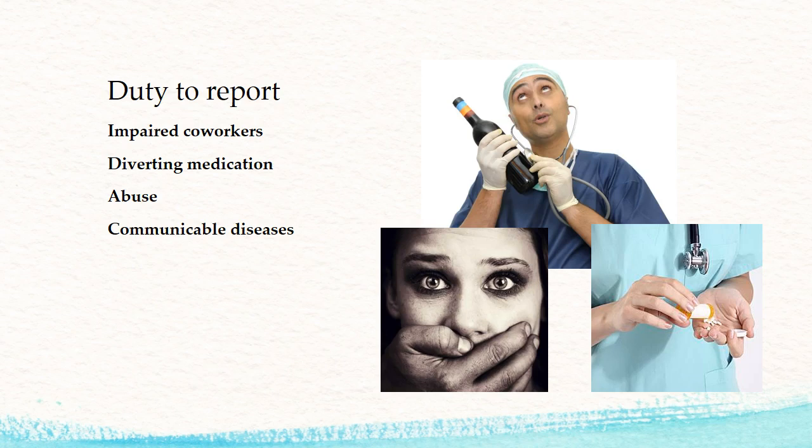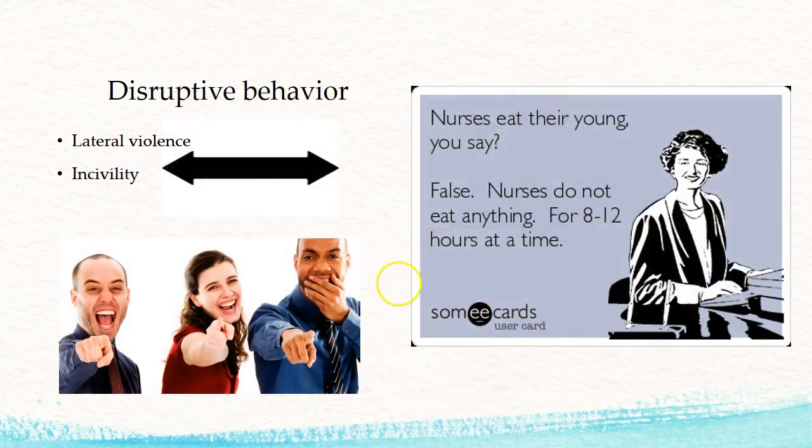As a nurse you have a duty to report certain things. Impaired co-workers — whether you think they're drinking or under the influence of drugs — you need to report that, starting with your nurse manager or charge nurse and moving up from there. Diverting medication: if you suspect a co-worker is not giving pain medication to a patient because the patient's pain isn't getting better but your co-worker is acting strange, you need to report that. You also need to report abuse and communicable diseases to the proper agency.